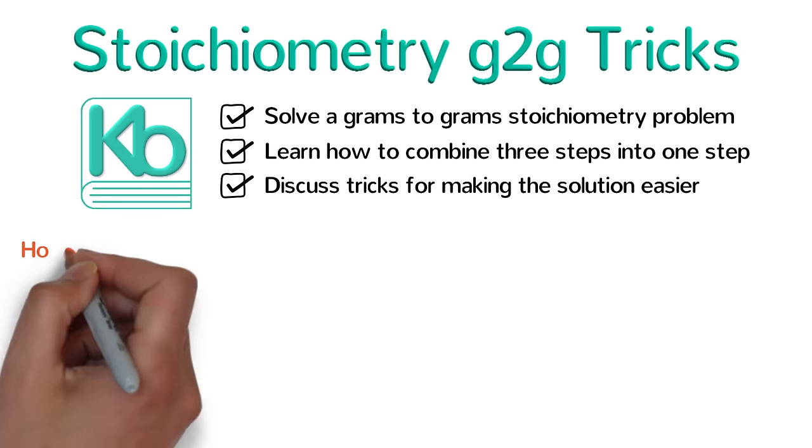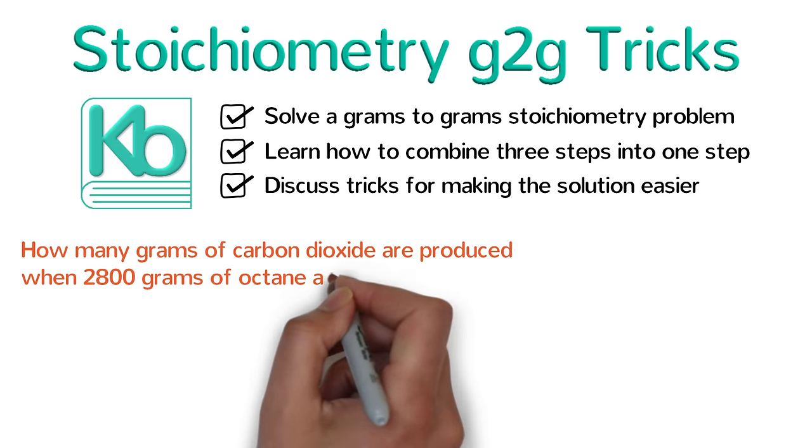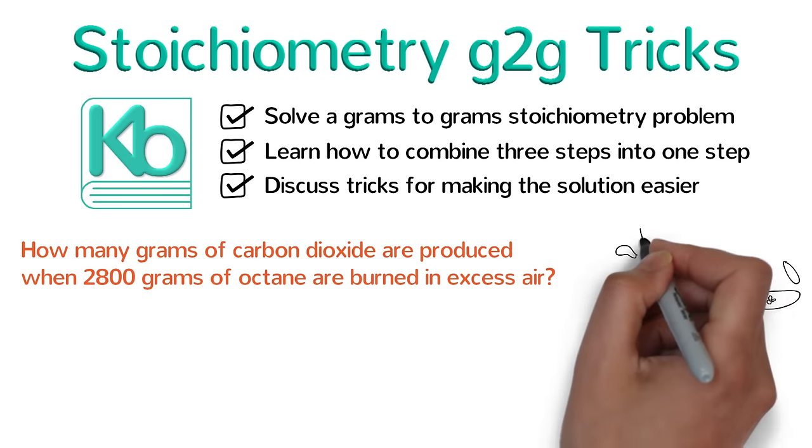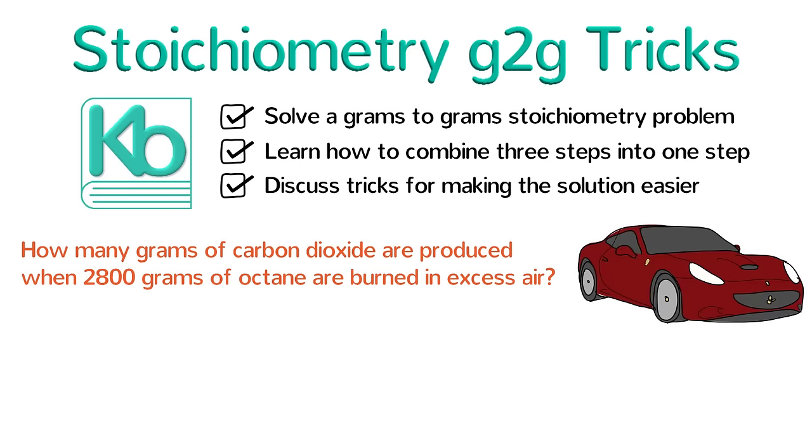Let's start with the problem. How many grams of carbon dioxide are produced when 2,800 grams of octane are burned in excess air? 2,800 grams is about one gallon of gasoline, so this problem is essentially asking us how much carbon dioxide does your car give off for every gallon of gas it consumes? This is a grams to grams stoichiometry problem.